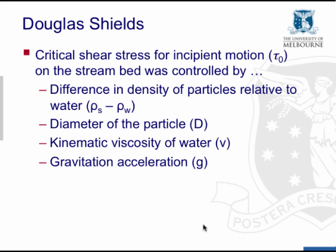Douglas Shields provided a relation, a model for the conditions of incipient motion based on a critical shear stress at which motion was initiated, and he proposed that this critical shear stress was dependent on a number of hydraulic variables: the difference in density of particles relative to the water, rho s minus rho w, the diameter of the particle, the kinematic viscosity of the water, and gravitational acceleration.